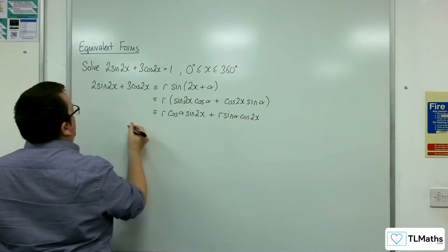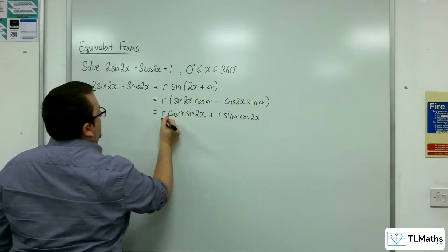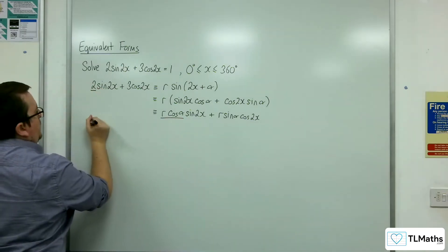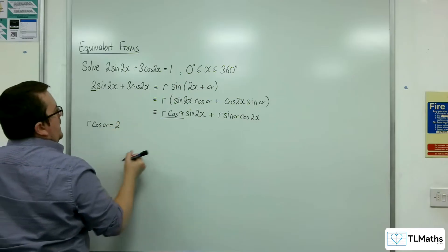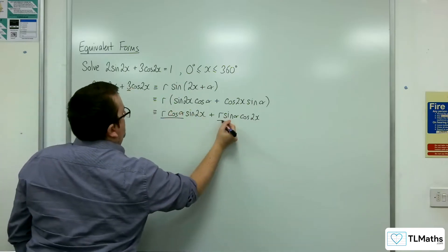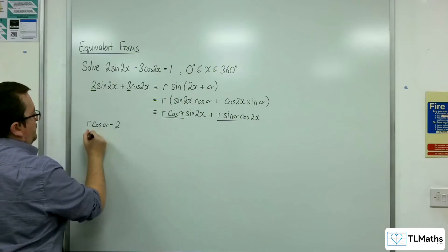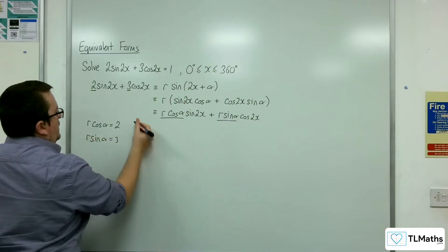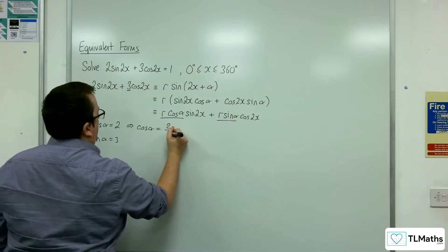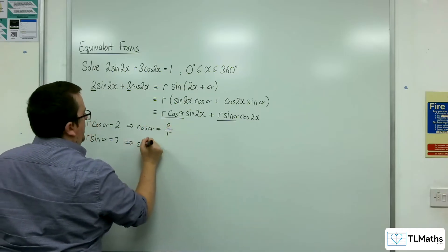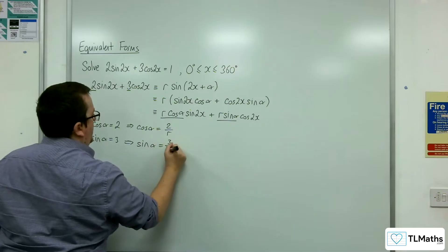The number in front of sin2x here must be the same as what we have there. So r cos alpha must equal 2, and 3 must be r sin alpha. If I rearrange those two to get cos alpha equals 2 over r and sin alpha equals 3 over r, I can then draw a right-angled triangle.